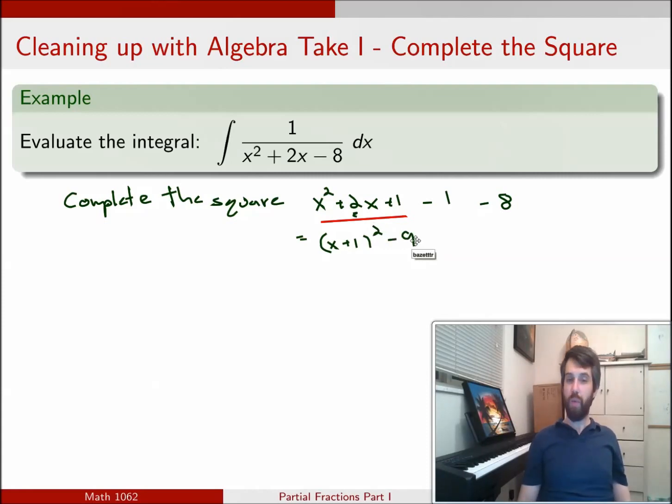So the reason why I might like this is if I'm going to go back to my original integral now, 1 over x squared plus 2x minus 8 dx, I can rewrite this as the integral of 1 over x plus 1 squared minus 9 dx. And the question is, well, have I helped myself? Is this more useful?